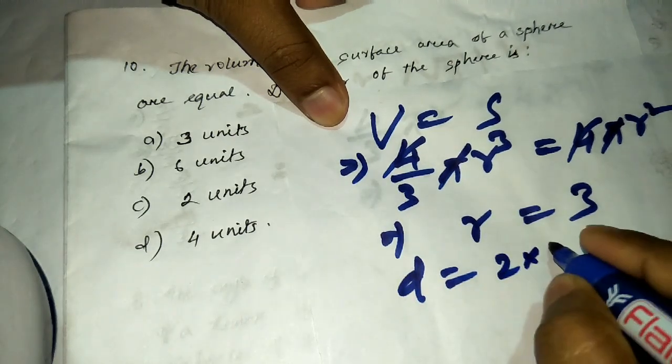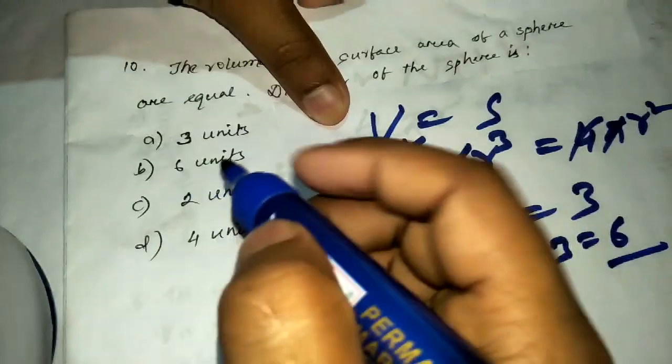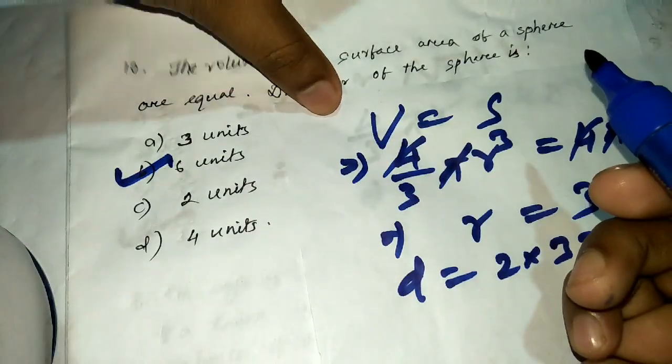Diameter = 2 × radius = 2 × 3 = 6. The answer is 6, which is option B.